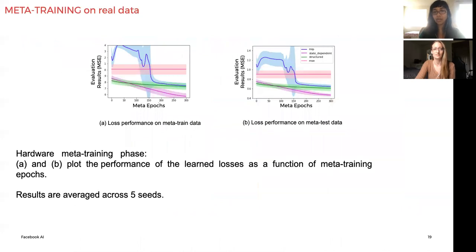These graphs record the progress of our meta-training procedure. The x-axis records the number of meta-epochs and the y-axis records the mean squared error between the predicted and the actual torque when the controller is trained with the indicated losses.